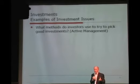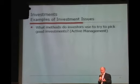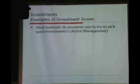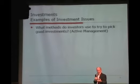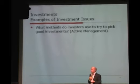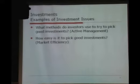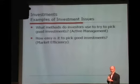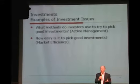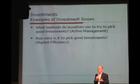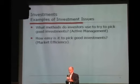Let's talk about investments. What methods do investors use to try to pick good investments? When somebody says IBM's a great buy right now, or Microsoft's overpriced — how do we determine that? That's one of the things we study and we call that active management. Another thing we talk about in finance is how easy is it to determine whether IBM or Ford Motor Company or General Electric is a good buy right now. Turns out it's not as easy as you might think — certainly not as easy as television commercials would have you believe.